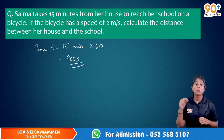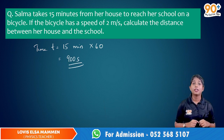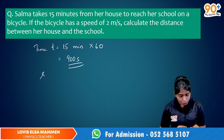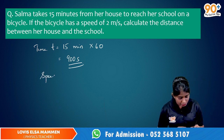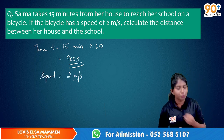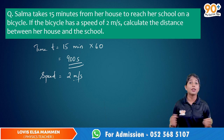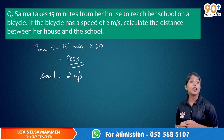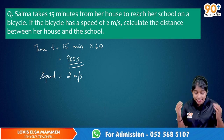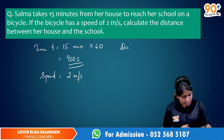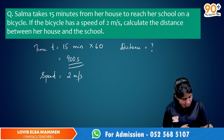The speed is also given in the question, which is 2 meters per second. So speed is equal to 2 meters per second. Now what are we asked to find? We are asked to find the distance. So distance is equal to question mark.